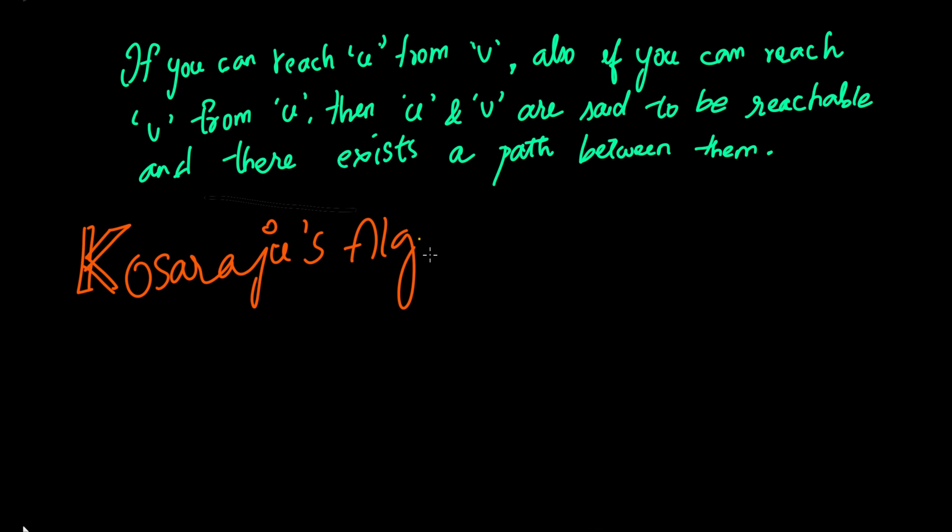Kosaraju's algorithm uses two traversals. One traversal on the original graph and one on the reverse graph. In the first traversal, we are trying to do this part of the statement. And in the second traversal, we are trying to do this part of the statement.